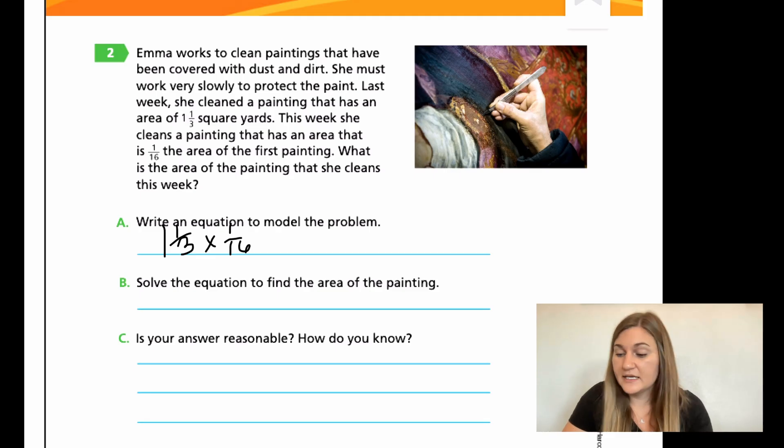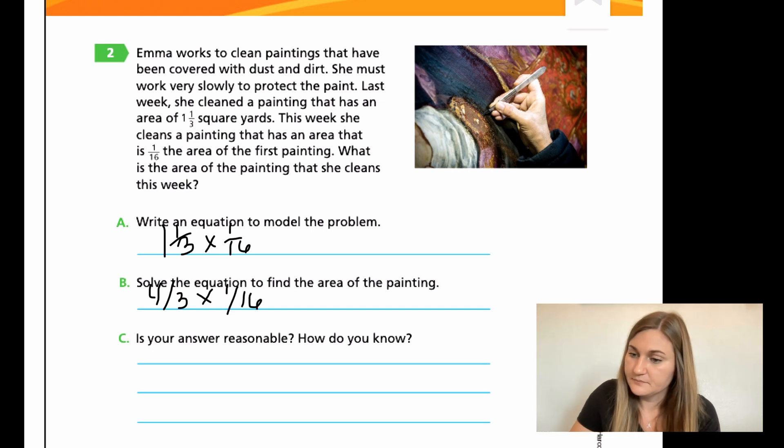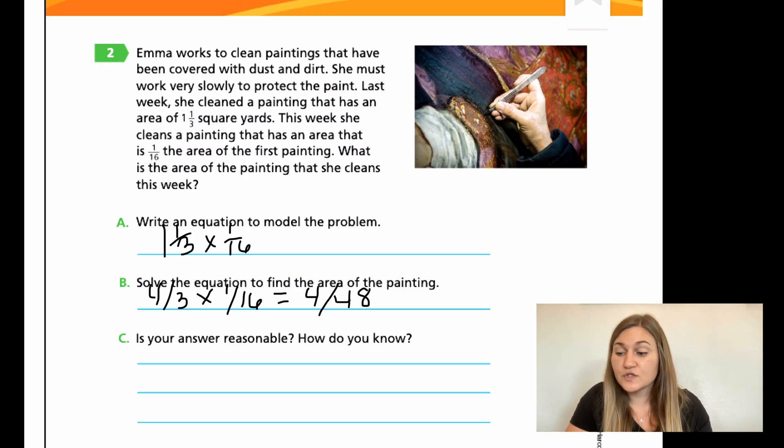So I'm going to have 4 over 3, and then I'm going to multiply it by 1 over 16. If I am going to be multiplying, I'm going to do 4 times 1 is 4. And my denominators, 3 times 16. 3 times 16 is 48. And I am finding the area, so I'm going to say 4 over 48. And the measurement or the unit that it used was square yards. So I would write that as yards, Y, D, with the exponent 2 for my squared. So we say 4 over 48 yards squared.